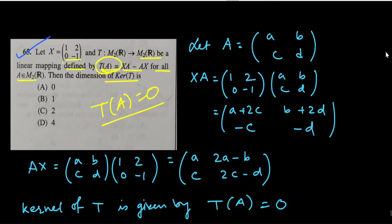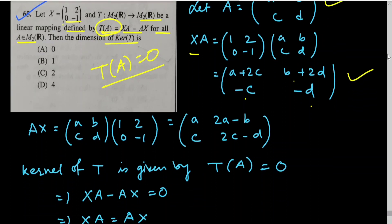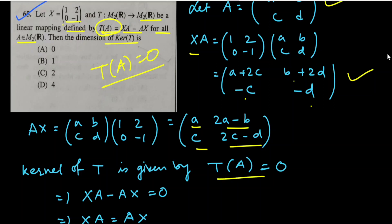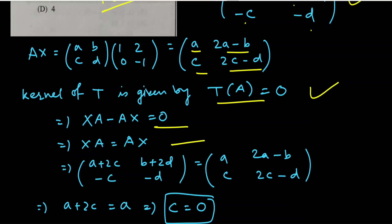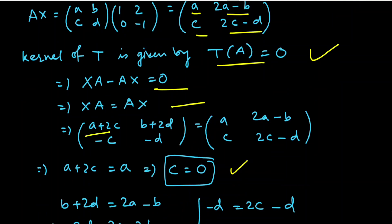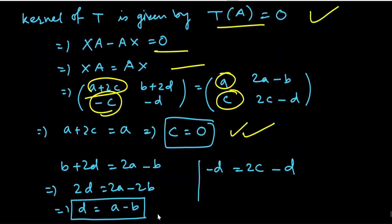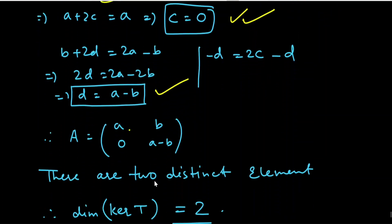Let A = [[a,b],[c,d]]. Computing XA and AX: XA = [[a+2c, b+2d],[c, d]] and AX = [[a, 2a−b],[c, 2c−d]]. Setting XA = AX and comparing element-wise: from the (1,1) entry, a + 2c = a gives c = 0; from the (1,2) entry, b + 2d = 2a − b gives d = a − b.